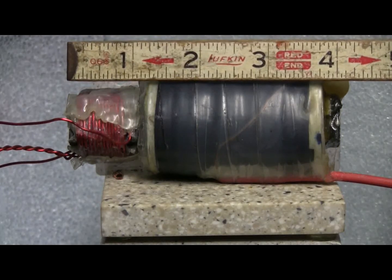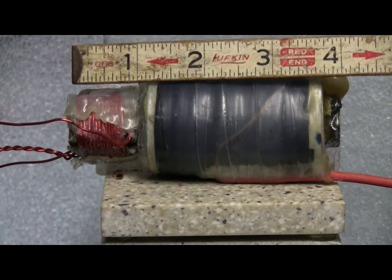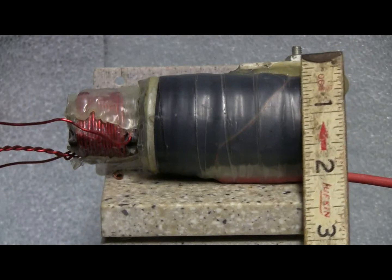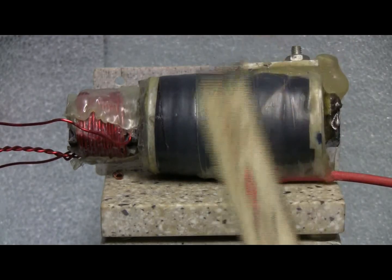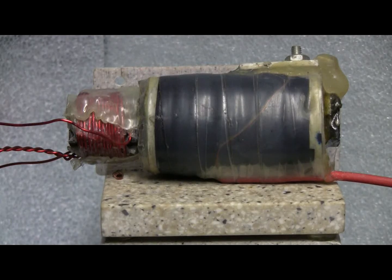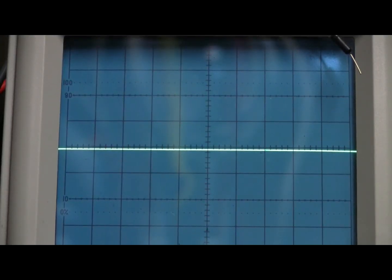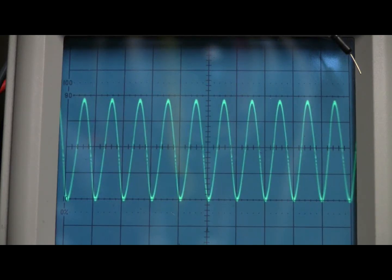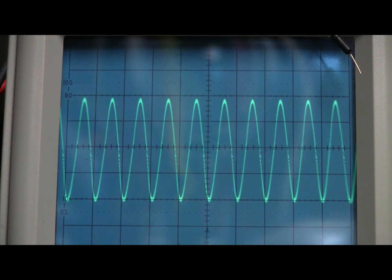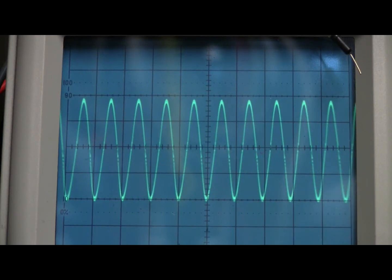The whole assembly is four inches long and the secondary is about two inches in diameter. Here's a shot of the waveform across the primary when I've started it up. It's a nice looking clean sine wave.